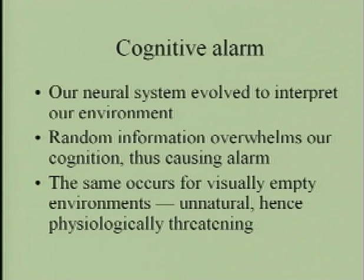Our neural system evolved to interpret our environment — that's the only reason we are here. Random information overwhelms our cognition, and when our cognition is overwhelmed, we are programmed to feel alarm. When we cannot interpret our environment to make sure it is safe, we trigger alarm inside. The adrenaline rises and we set up the fight-or-flight syndrome that has saved us from extinction.